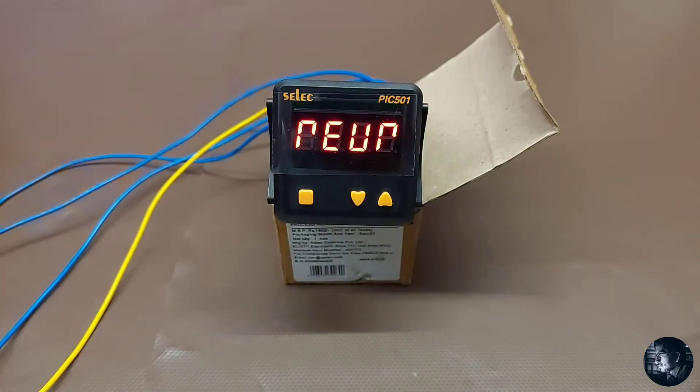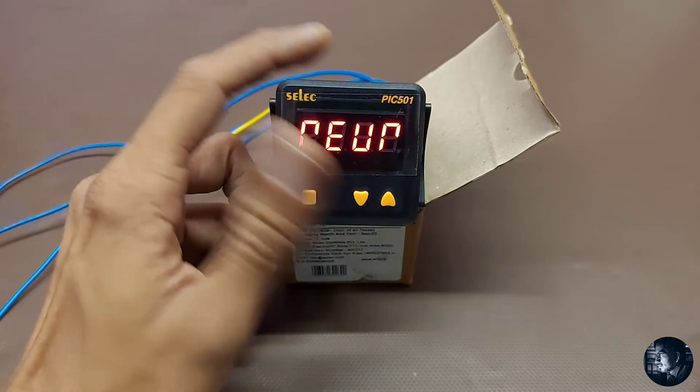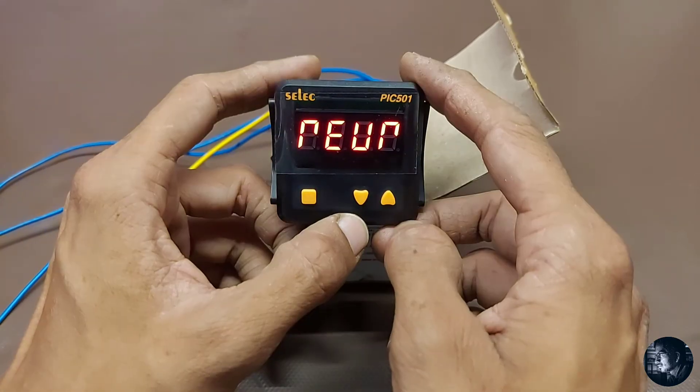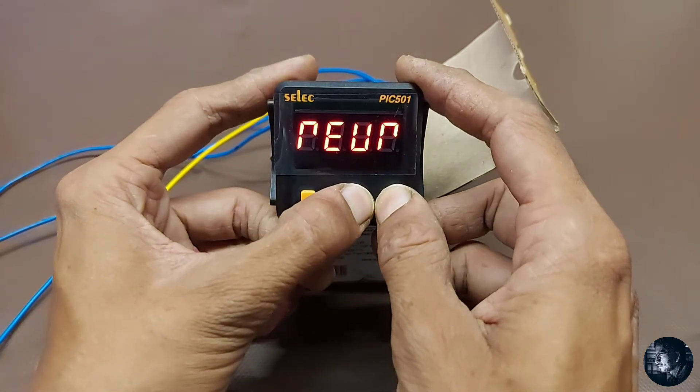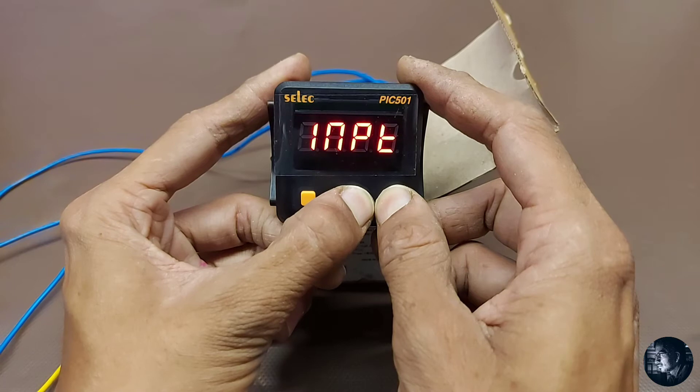We are giving 0 to 10V DC. First, simultaneously press both the up and down buttons for three seconds to go into the menu. The input is currently selected as 4mA, that is 4 to 20mA.